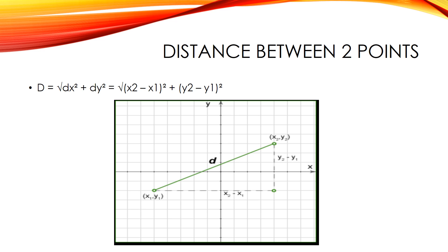The above formula can be written in the following way for given two points (x1, y1) and (x2, y2): d = √((x2 - x1)² + (y2 - y1)²).